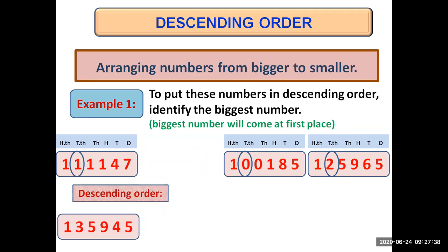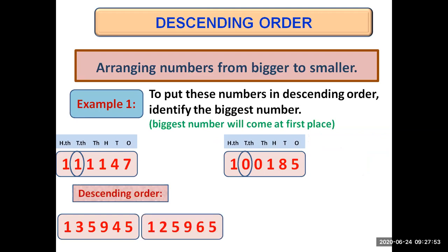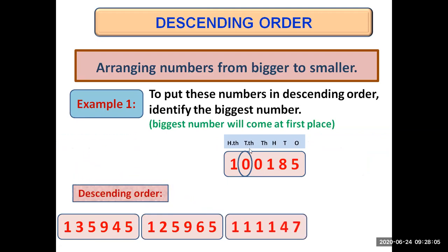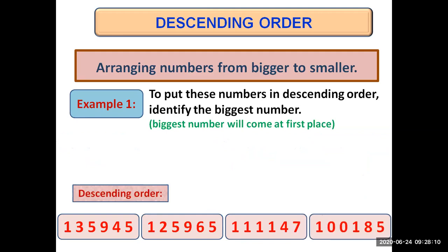The last number has two at 10,000 place, which is greater than the 10,000 digit of the first and third numbers. So the number with two at 10,000 comes at second place. Among the remaining two, the first number has a greater digit at 10,000 place, so it comes at third place and the remaining number goes at last place. We have now arranged the given numbers in descending order, that is from bigger to smaller.